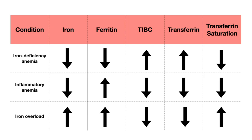Let's do a brief summary. Iron deficiency anemia is your classic presentation where ferritin is low and transferrin is going to be high. In contrast, with inflammatory anemia, you also have a low iron level, but this isn't because there isn't enough iron in the body — there's actually a lot in storage, it's just not able to get released. So in this case, we have high ferritin and low transferrin. And then with an iron overload state, you have high iron, high ferritin, and high transferrin saturation, because there is a lot of iron both in the serum as well as in storage.